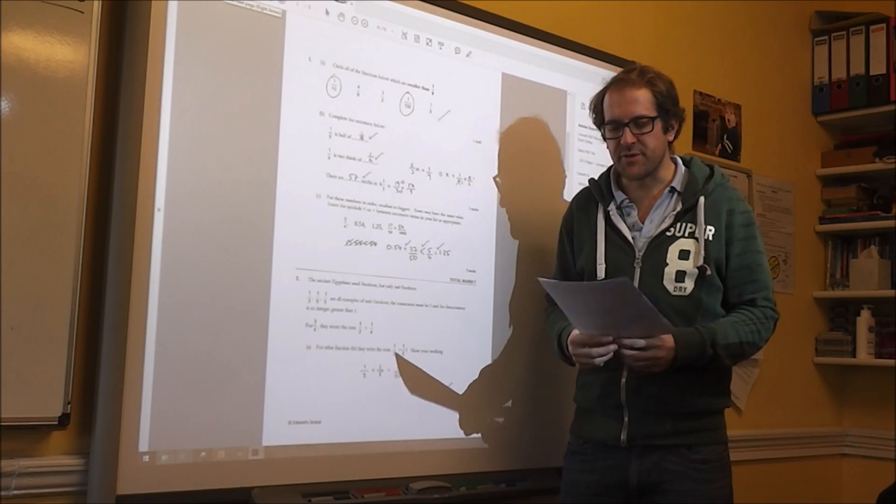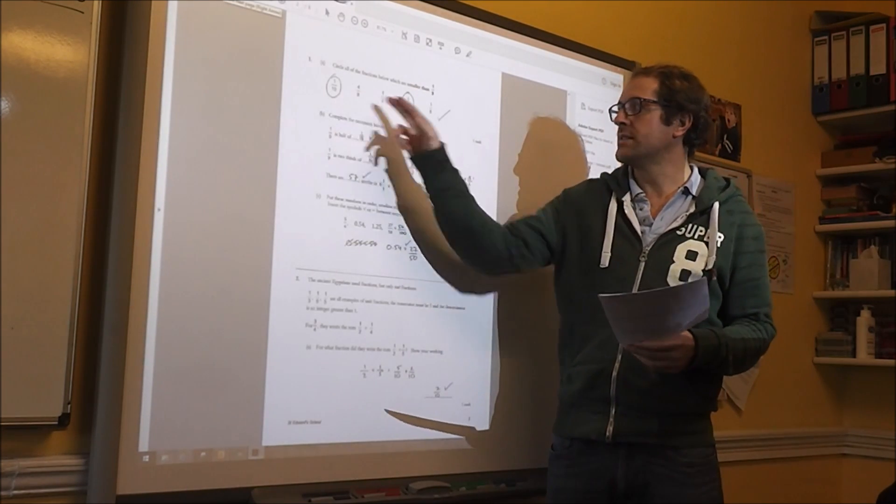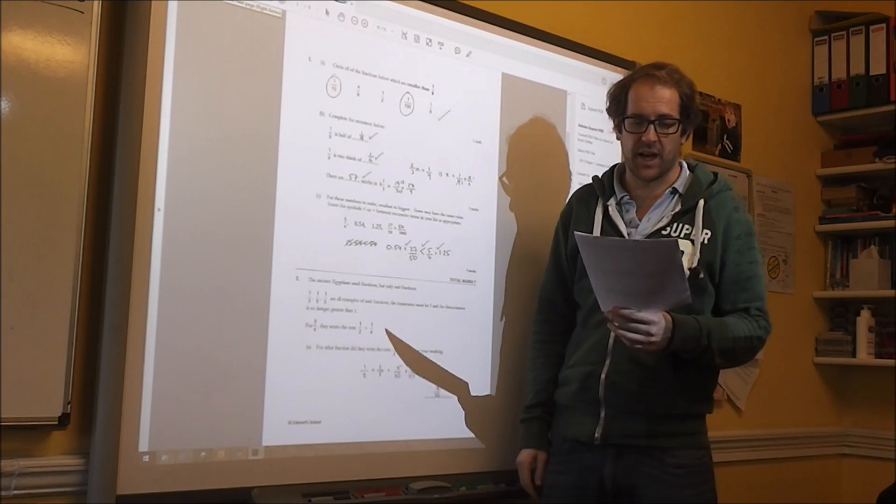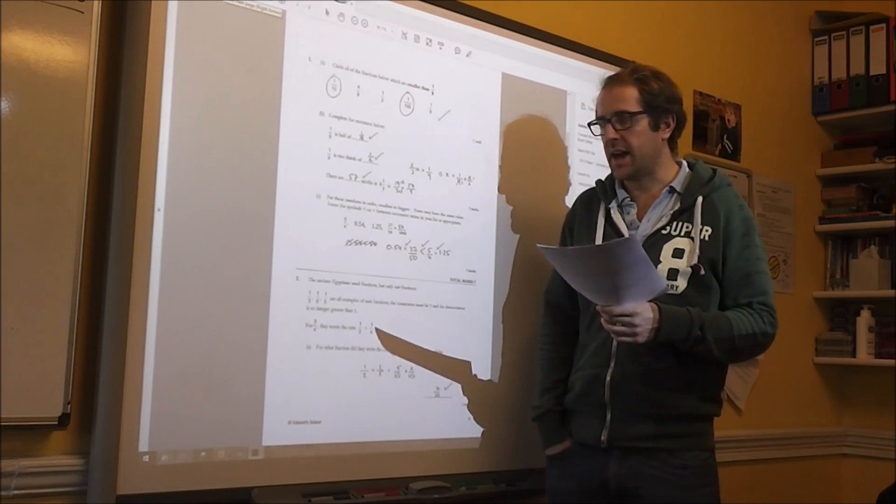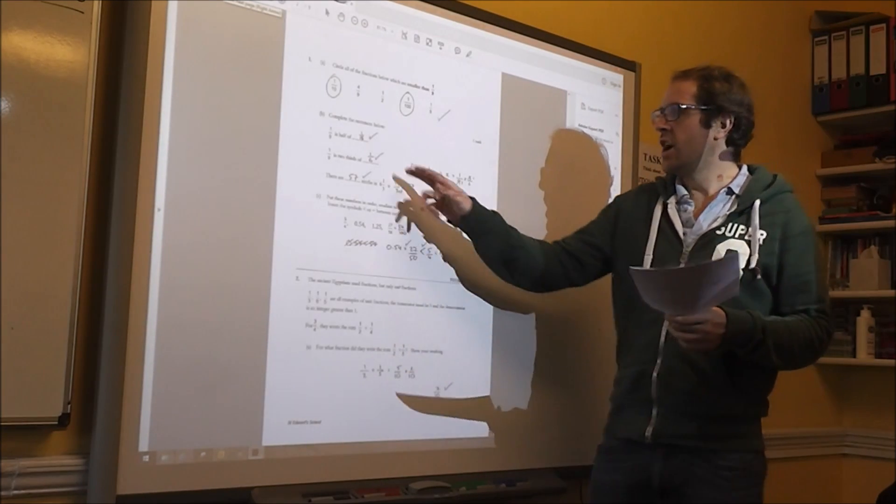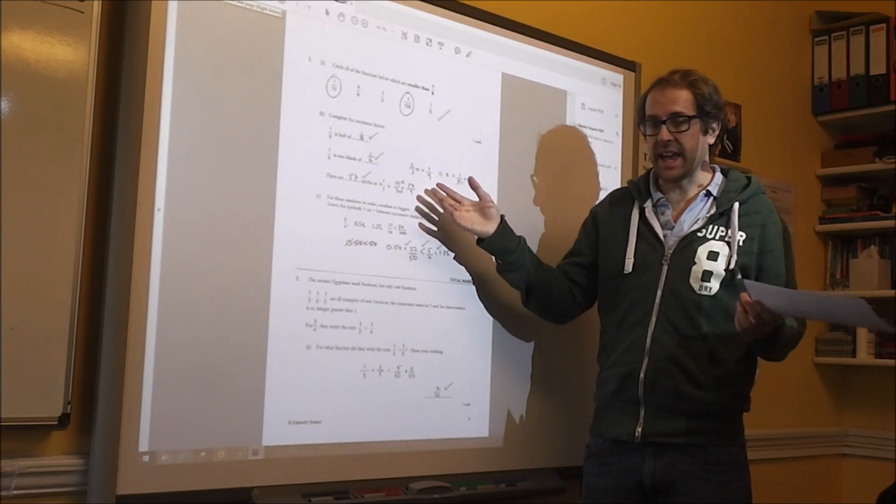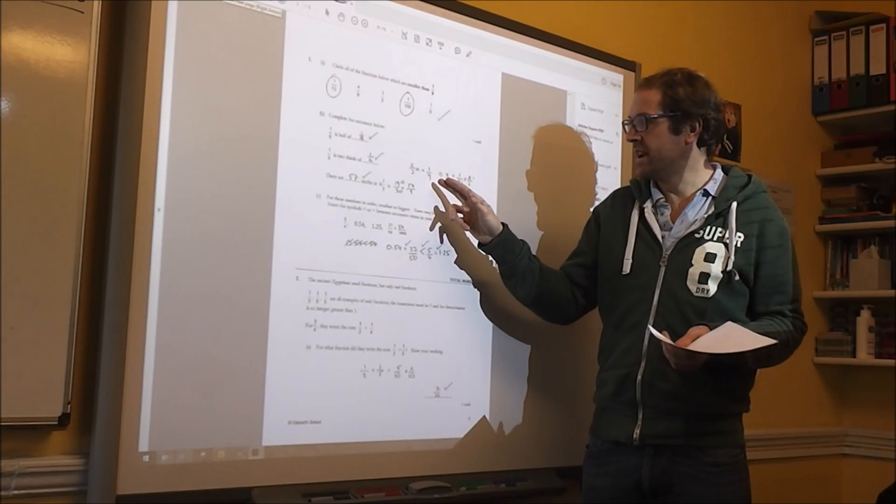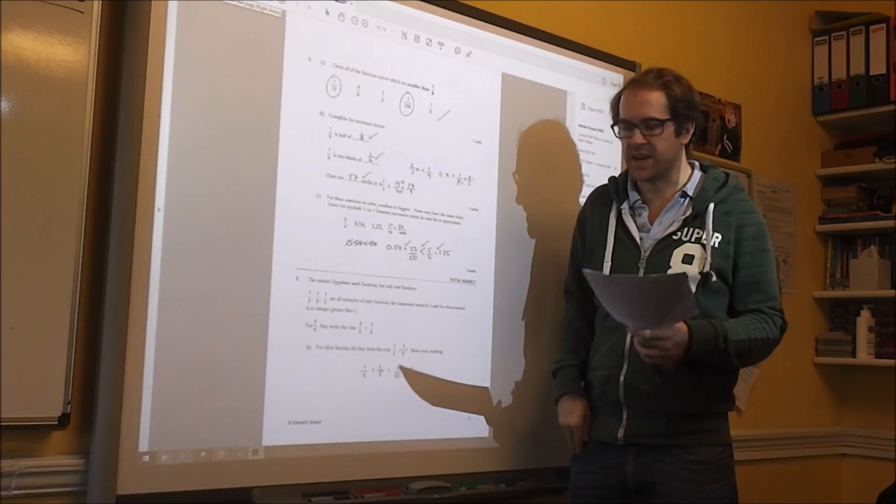So question one is fractions, which ones are smaller than 1 ninth, 1 tenth and 1 hundredth there for your mark. 1 ninth is half of 1 eighteenth and it's also 2 thirds of 1 sixth and I did that by saying a fraction is x, 2 thirds of x is 1 ninth, then flipping times and x is 2 sixths there.